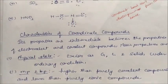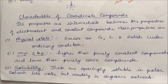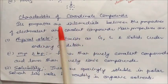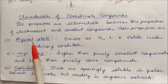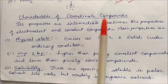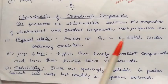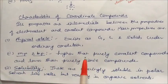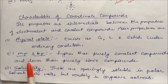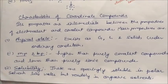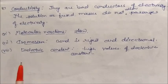Now we will see the characteristics of coordinate compounds. Their properties are intermediate between the properties of electrovalent and covalent compounds. Physical state: they can exist as solid, liquid, or gas under ordinary conditions. Melting point and boiling point are higher than purely covalent compounds but lower than purely ionic compounds. Solubility: primarily in polar solvents like water, but rarely in organic or non-polar solvents.